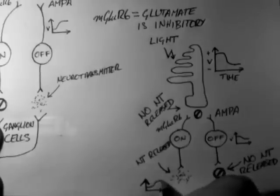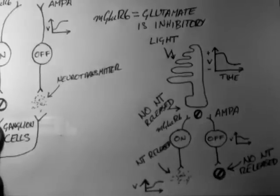If we look at inside this cell, it will become depolarized when there's no neurotransmitter released, and therefore it will release its own neurotransmitter. And that's an overview of bipolar cells.